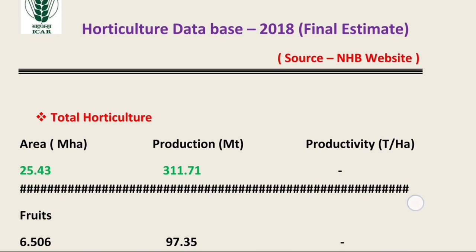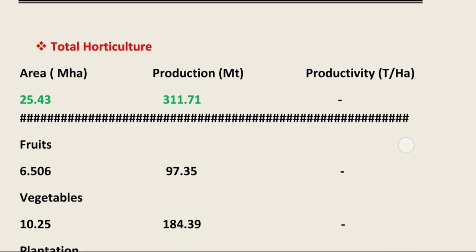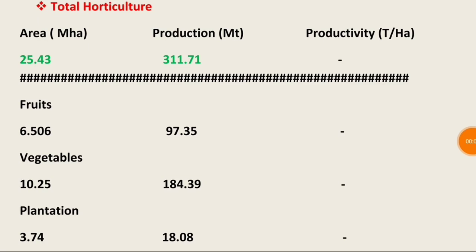In terms of total horticulture, the total area is 25.43 million hectare and total production is 311.71 million ton. Productivity is not mentioned yet in that data.